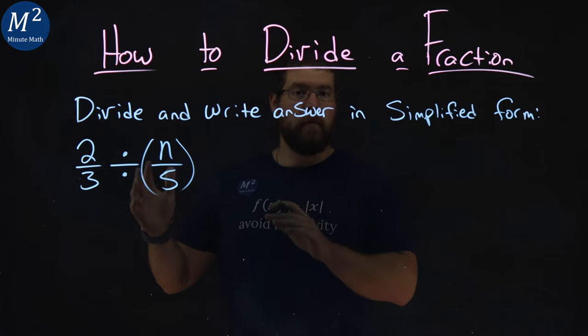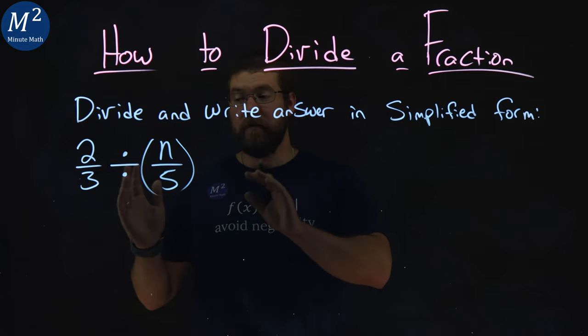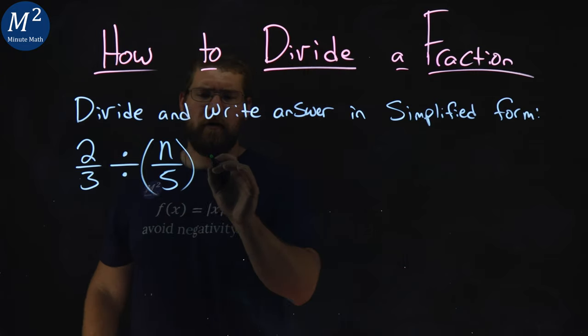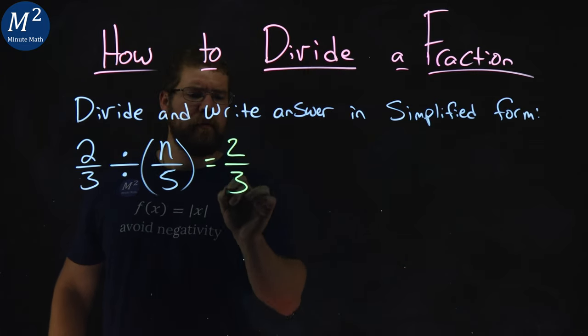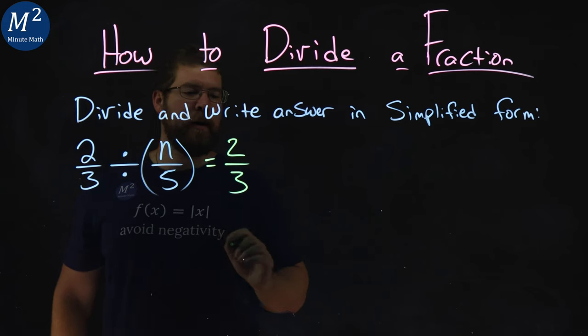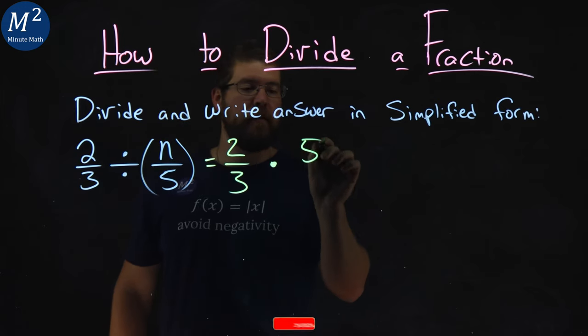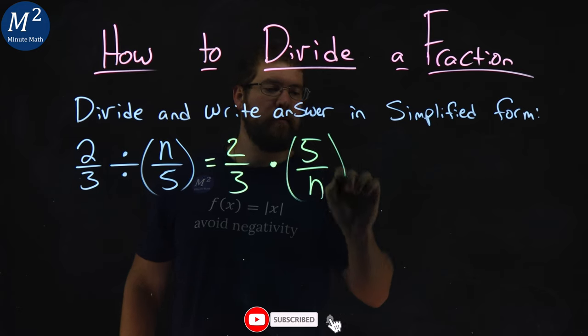Well, if you remember from before, division can be written as multiplication of the reciprocal. So two-thirds divided by n over five is the same thing as two-thirds multiplied by five over n, the reciprocal.